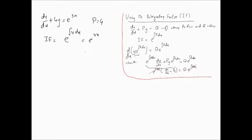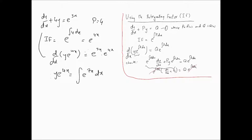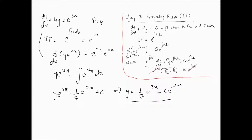Multiplying both sides by the integrating factor, the theory works. The differential equation can be written as: d/dx of Y·e^(4x) equals e^(3x)·e^(4x). That means Y·e^(4x) equals the integral of e^(7x) dx, which gives e^(4x) = (1/7)e^(7x) + C. This further implies Y = (1/7)e^(3x) + C·e^(-4x), and that's the solution to this differential equation. That's how we use the integrating factor.